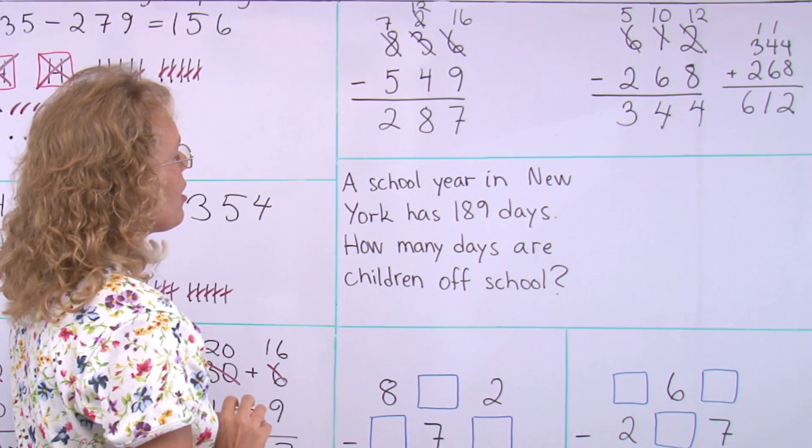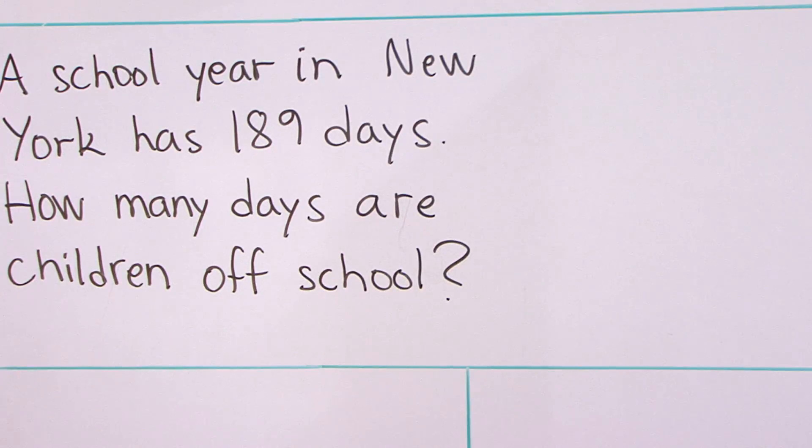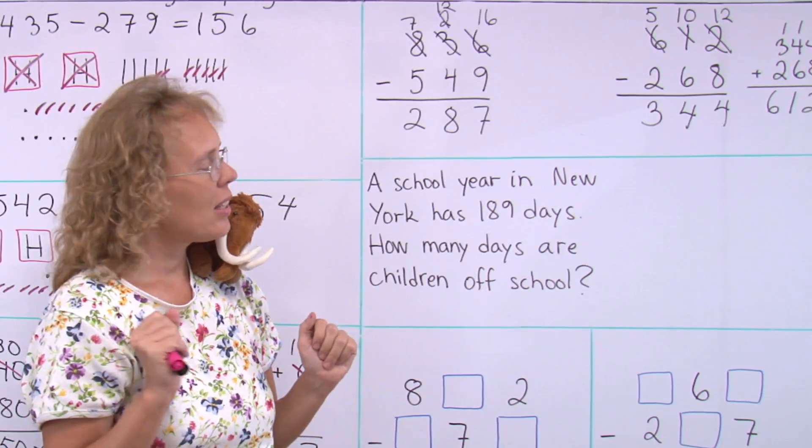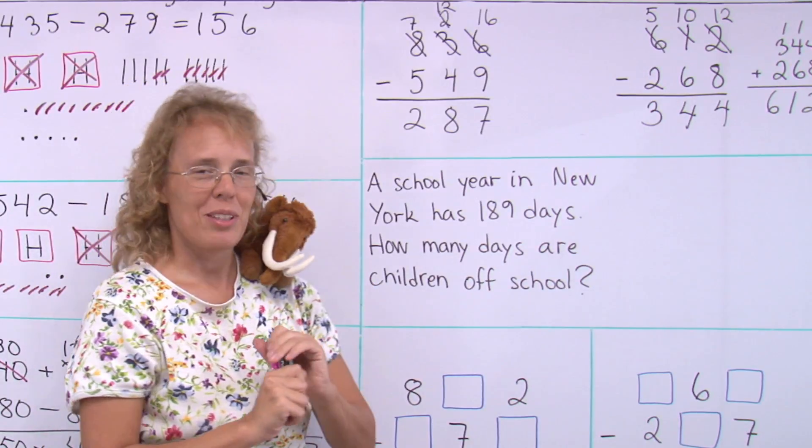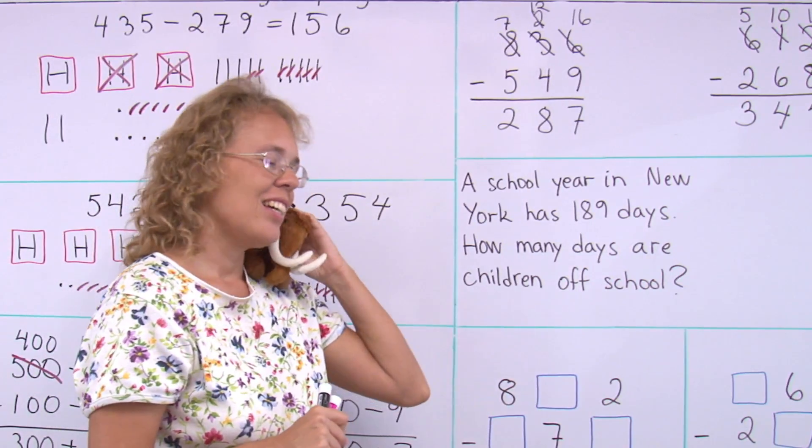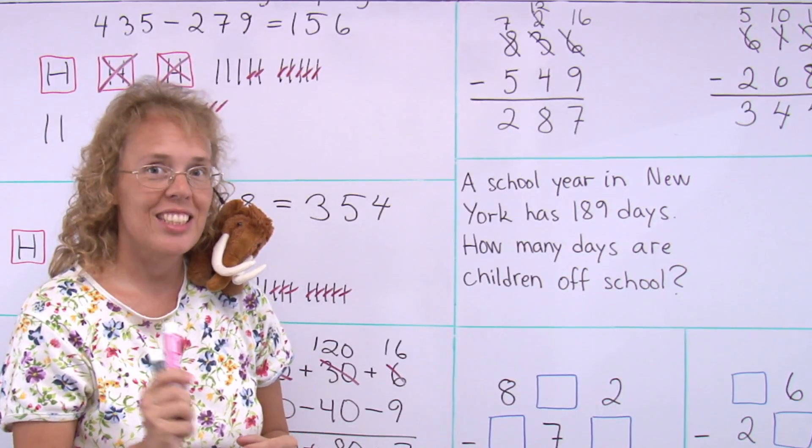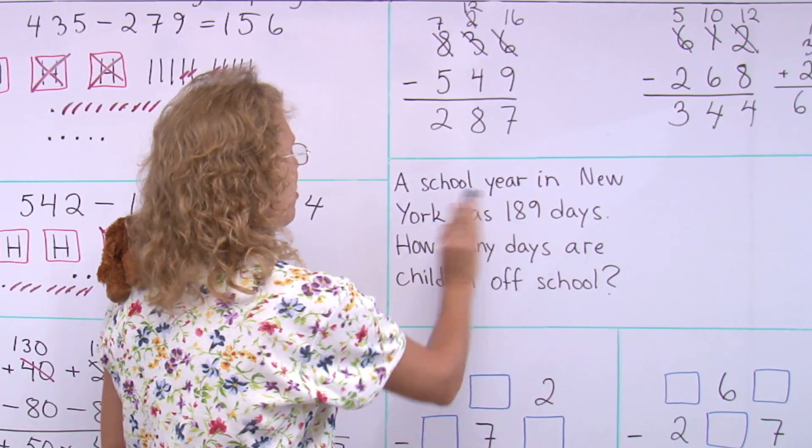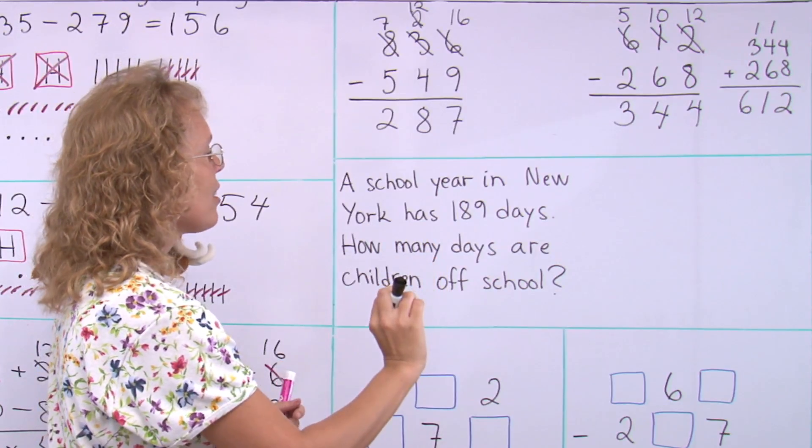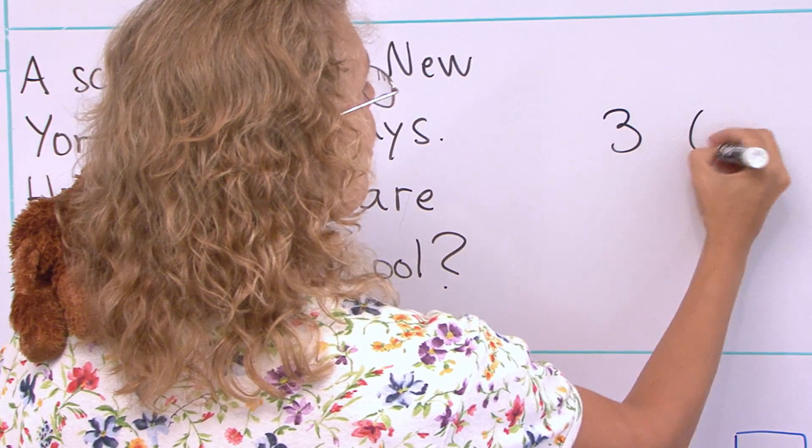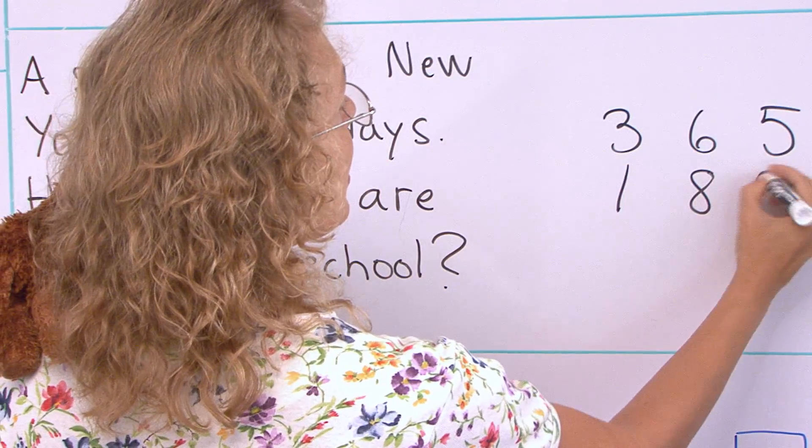A school year in New York has one hundred and eighty-nine days. One hundred and eighty-nine days that children go to school. How many days are children off school in this one year, within one year? To solve this, you need to know something else. You need to know how many days there are in one year. That's three hundred and sixty-five.